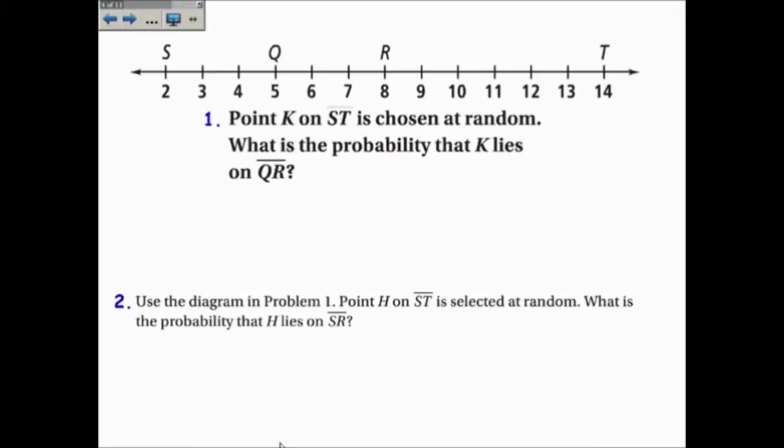A few examples. Number 1, if point K is on ST chosen at random, what is the probability that K lies on QR? Now, QR is this part right here, and we'll find the length of QR divided by the length of ST.